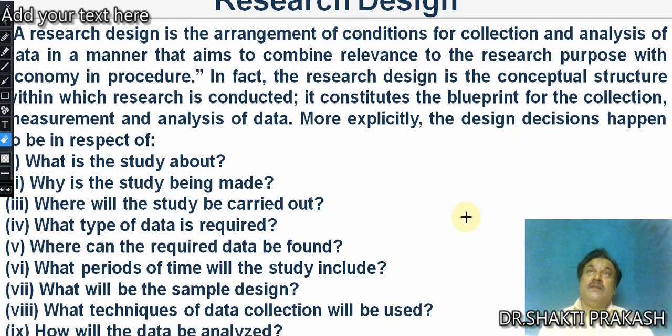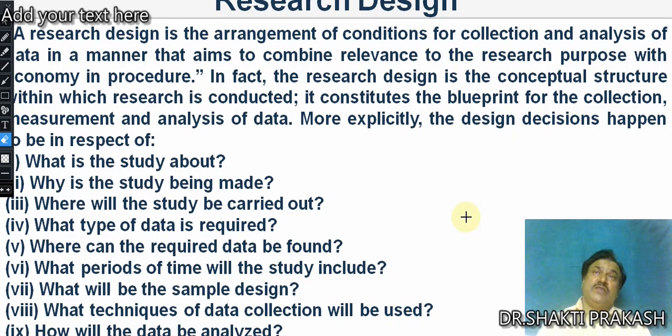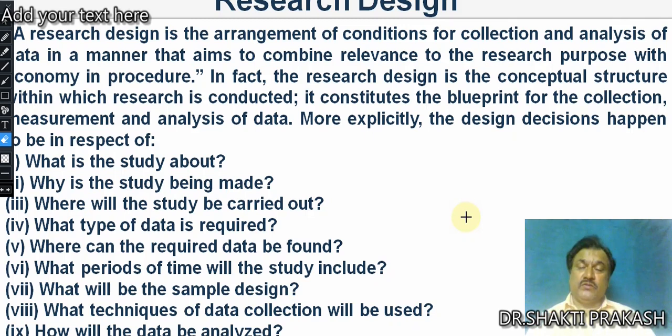What will be the sample design? Sampling is a particular topic we will discuss in detail later. You should know how you will decide the sample. Sampling can be random, convenient, judgmental, or quota type. There are two types: probability and non-probability sampling. What type of sampling you will decide, what sample size, and what sample unit to take — we will discuss all these details in the sampling chapter.